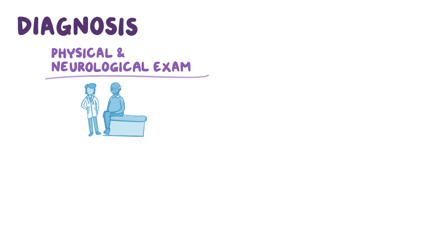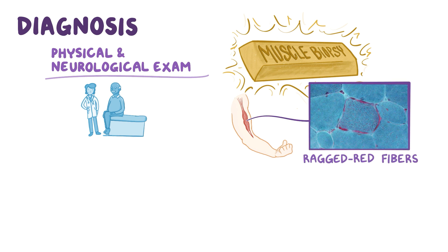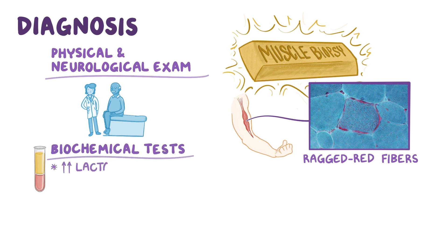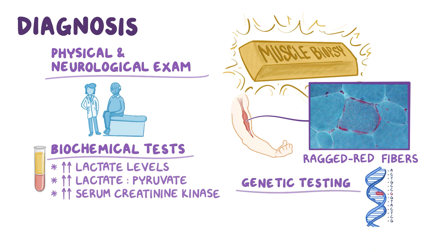Diagnosis begins with a physical and neurological examination to rule out central nervous system involvement. A muscle biopsy is the gold standard test, showing the characteristic ragged red fibers which are caused by compensatory proliferation of abnormal mitochondria. In addition, biochemical tests can be done to look for elevated blood lactate levels, high blood lactate to pyruvate ratio, and elevated serum creatinine kinase. Genetic testing can also be done to look for mutations in mitochondrial or nuclear DNA.